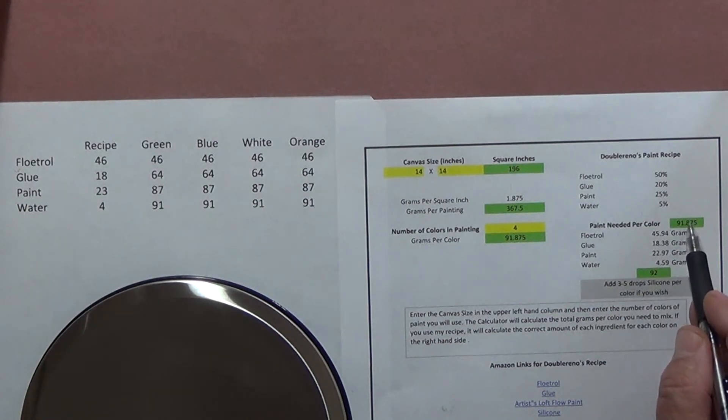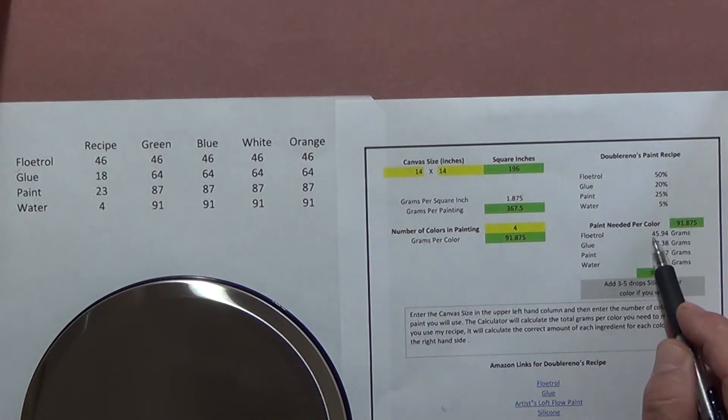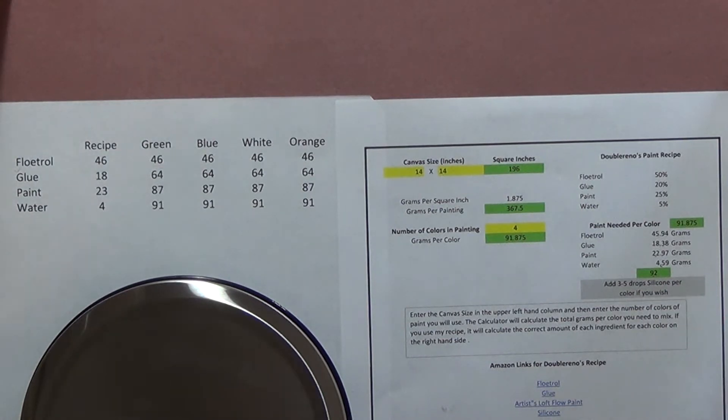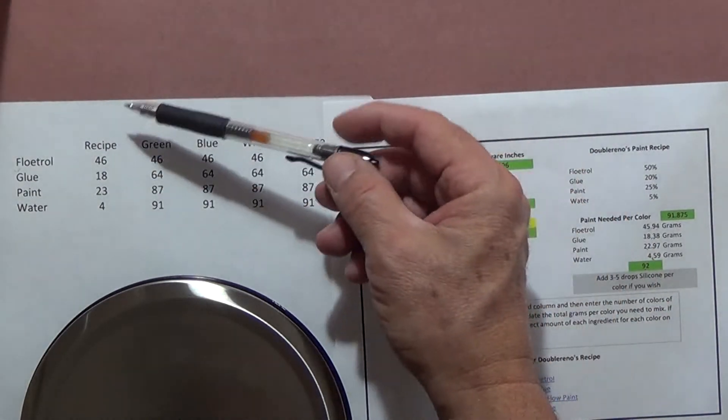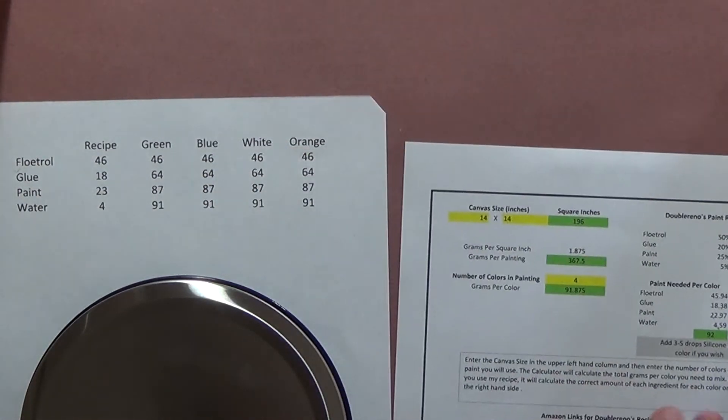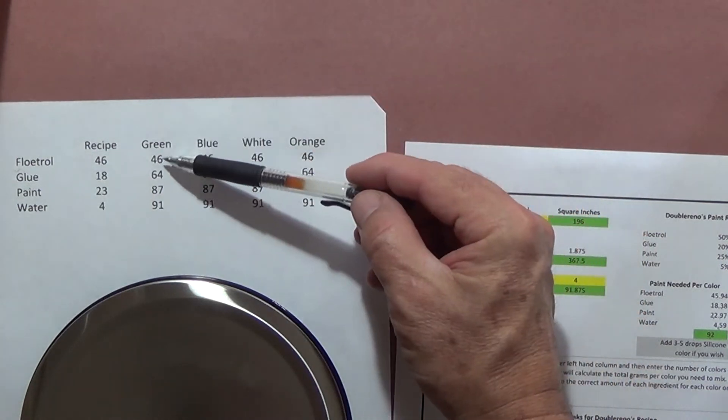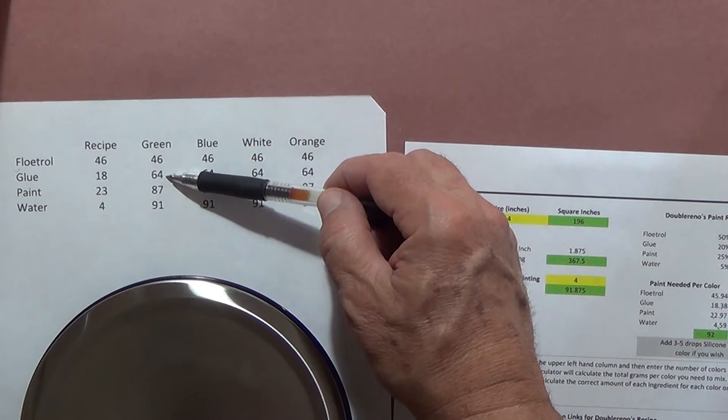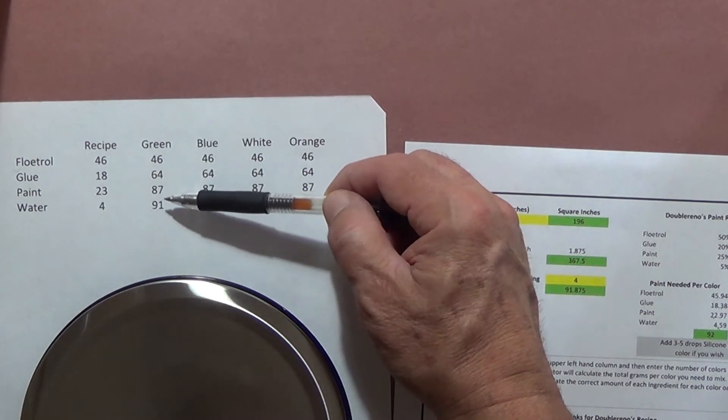So it tells you you need 91.87, and it breaks down how many grams of each one you need. The Floetrol is 45, which I round up to 46. The glue I rounded down to 18. The paint is 22.97, I rounded up to 23. And the water I rounded down to 4. So it gives me a total of 92 grams. I broke this out—this is my recipe with the same numbers rounded up and down. Then I've got my four colors: green, blue, white, and orange. I'll weigh up to 46 grams, then I'll go up to 64 when I add the glue, up to 87 when I add the paint, up to 91 when I add the water.